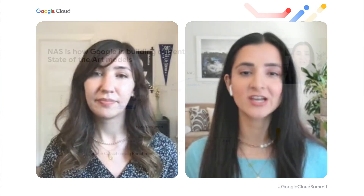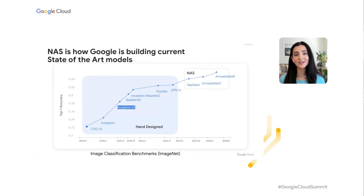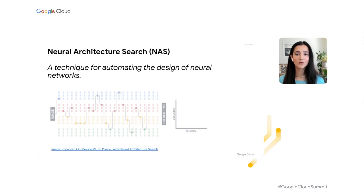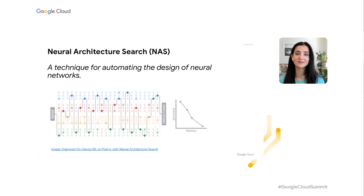Thanks so much, Dale. When you start working on a new ML problem, it's not uncommon to use the latest architectures from research as your starting point. But have you ever used models like NASNet, AmoebaNet, or SpineNet? It might surprise you to learn that these state-of-the-art model architectures weren't hand designed — they were actually created by a technique called neural architecture search, or NAS. NAS is a technique for automating the design of neural networks. In a typical NAS setup, you have a controller which proposes ML models sampled from a search space — the range of architectures that can be represented — then trains and evaluates the models, iterating thousands of times to find the model that best meets the objective.